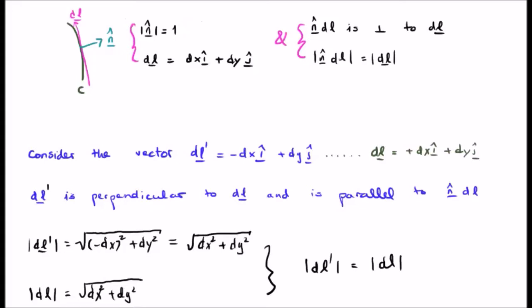Next we look at the definition of DL. DL is none other than DX i hat plus DY j hat. Okay, there's nothing out of the ordinary there.